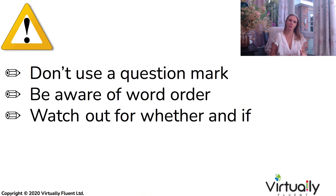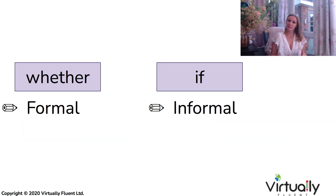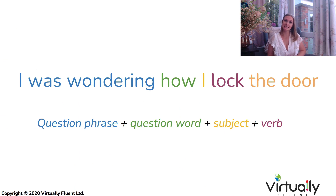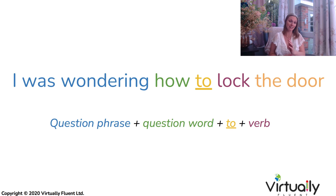The next thing is to be careful with the two words 'whether' or 'if'. Generally, 'whether' is used in a lot more formal circumstances and 'if' is a lot more informal. There are tiny differences in meaning as well, however in this particular context generally they're used in the same way. The next little thing is where we can actually replace the subject with the word 'to' in English before our main verb. This is very informal and it's a really nice way of boosting that native level vocabulary. For example: 'I was wondering how I lock the door' — we can replace the subject 'I' with 'to': 'I was wondering how to lock the door.' You can use this with any question word, not just 'how'.